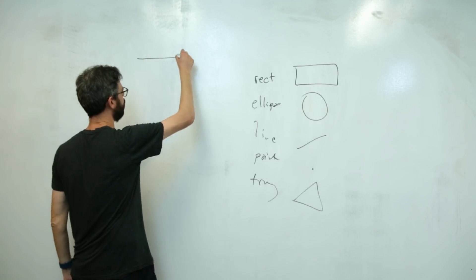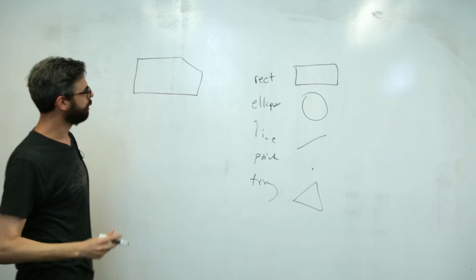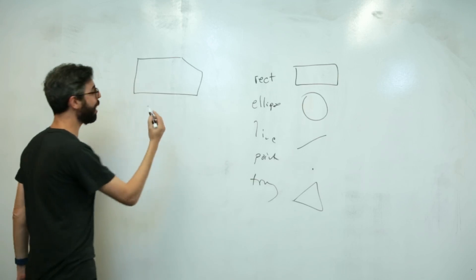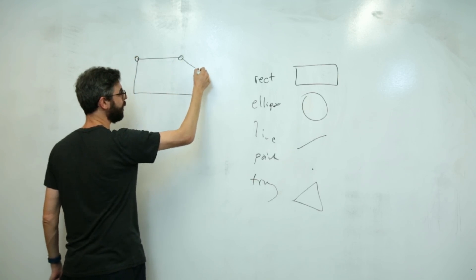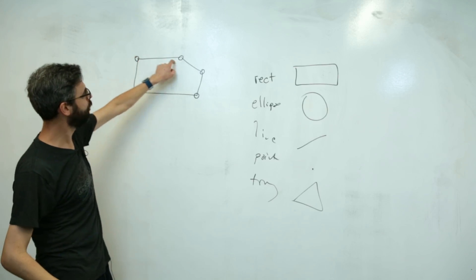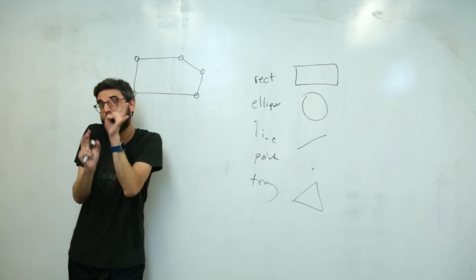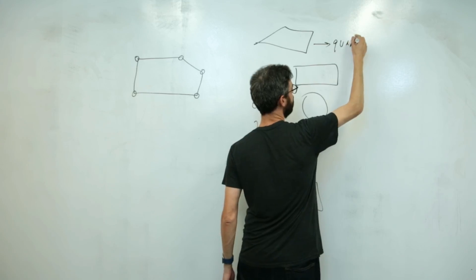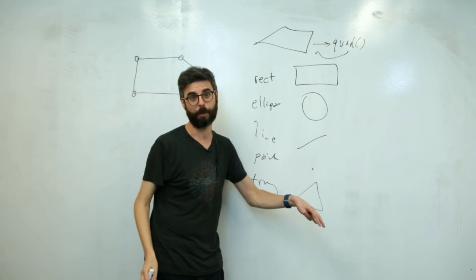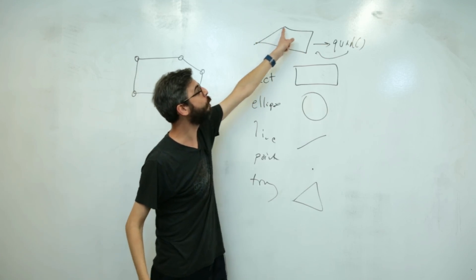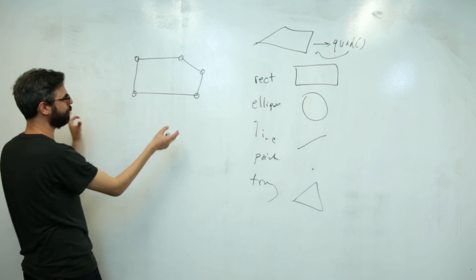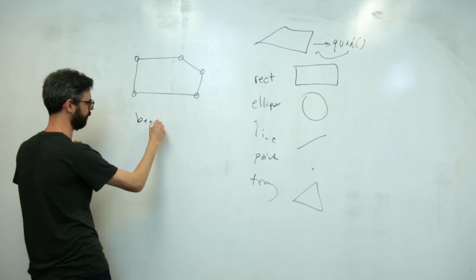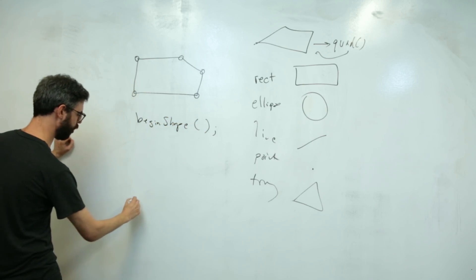Let's start with something simpler. What if I wanted to do this shape? We can think of it as a polygon — a shape with many sides. A polygon can be defined by its vertices, the vertices being each of these points that connects the sides. If you have a polygon with four arbitrary sides, you can actually do this with the quad function. But what I want to do is make a custom shape. The only way I know of is to use a function called beginShape and a function called endShape.